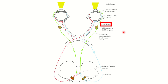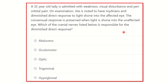Hi everyone, welcome to another question and answer session for the MRCS exam. A 32-year-old lady is admitted with weakness, visual disturbance, and periorbital pain. On examination, she is noted to have mydriasis and diminished direct response to the light shown into the affected eye. The consensual response is preserved when light is shown into the unaffected eye.